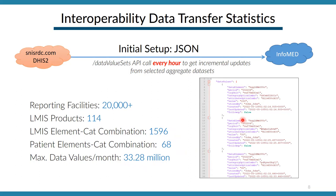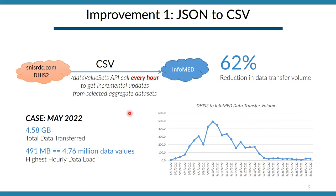We found that the data volume was too much. The first improvement was switching from JSON to CSV using the Data Value Sets API. For example, on the 10th of May, the maximum hourly data was 491 megabytes transferred in one hour with 4.76 million data values, and the total data that came was 4.58 gigabytes. Moving to CSV reduced the data burden by 62%, but that was still not enough.